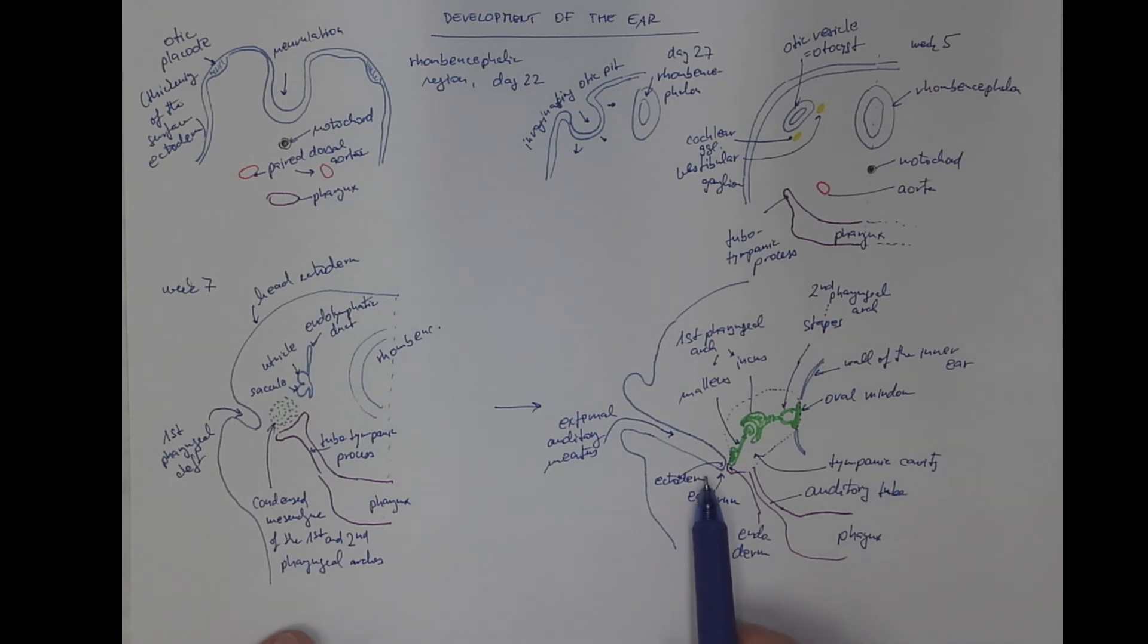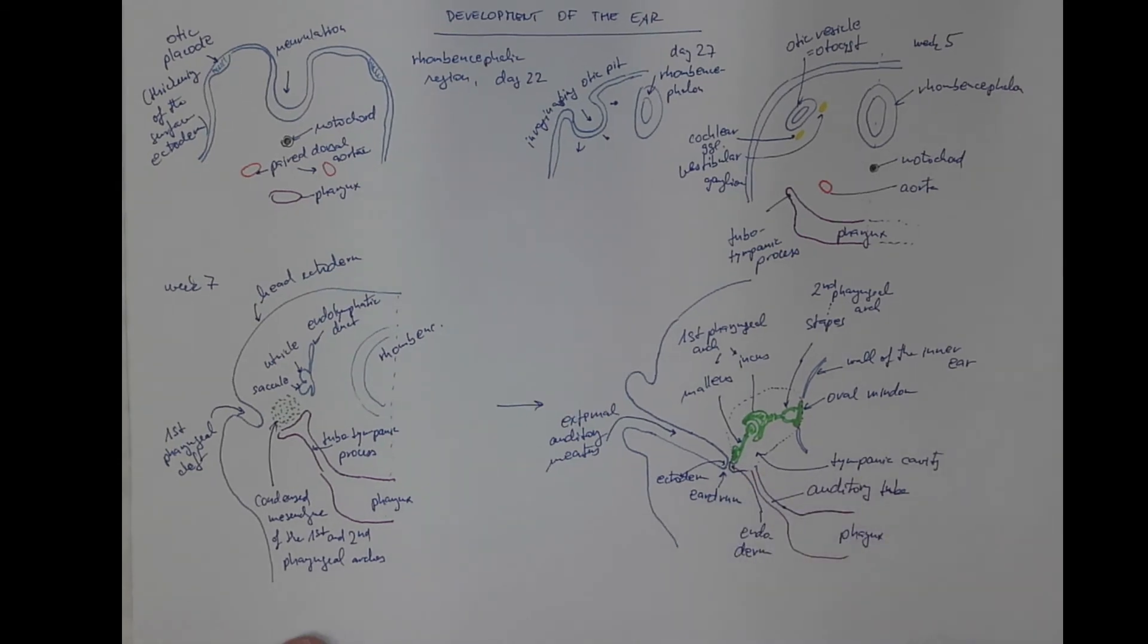So the ectoderm is pretty much close to the endoderm. In the eardrum, there is a thin layer of connective tissue separating these two layers. The eardrum is also called the tympanic membrane.